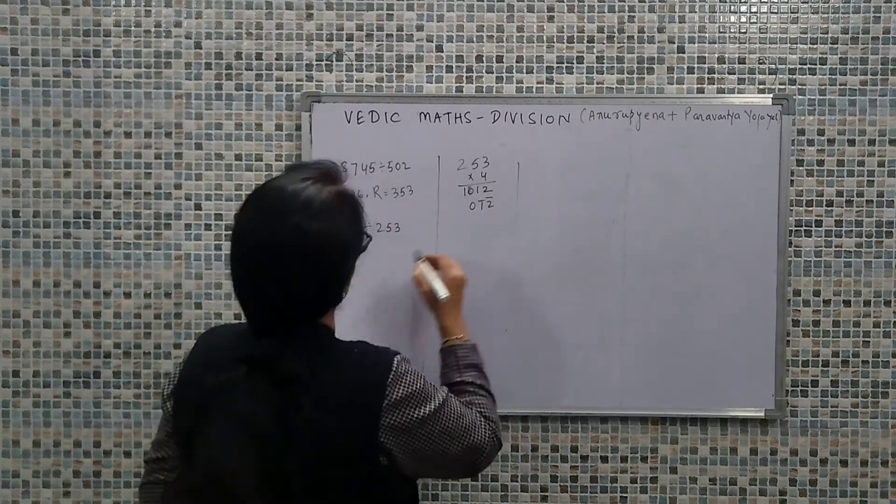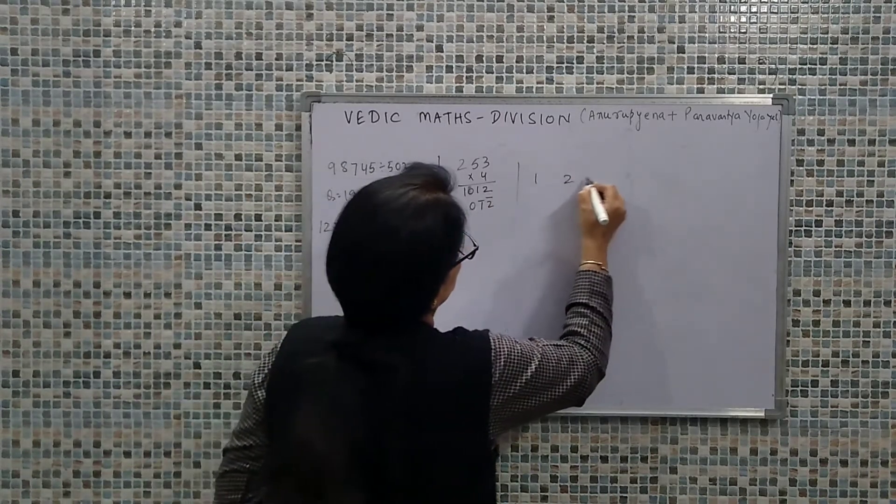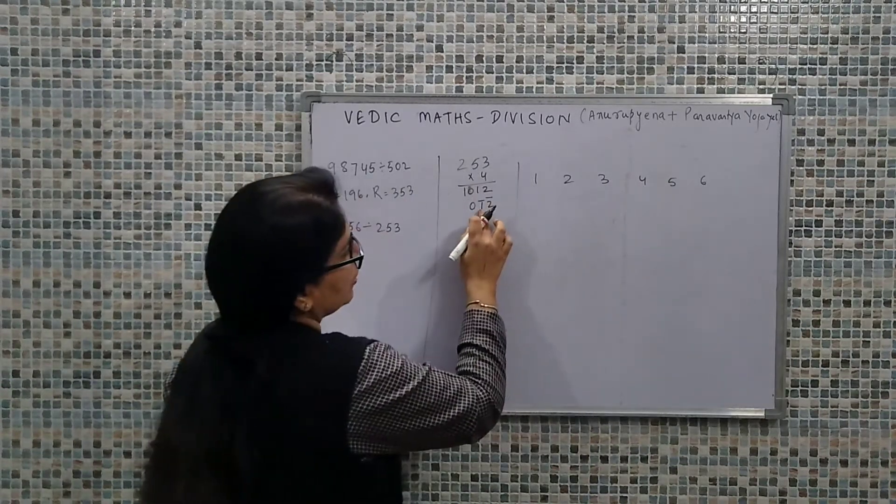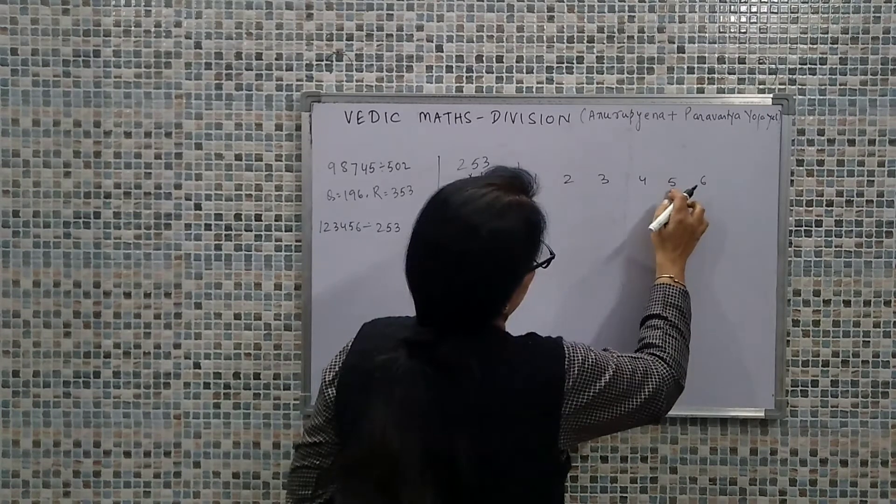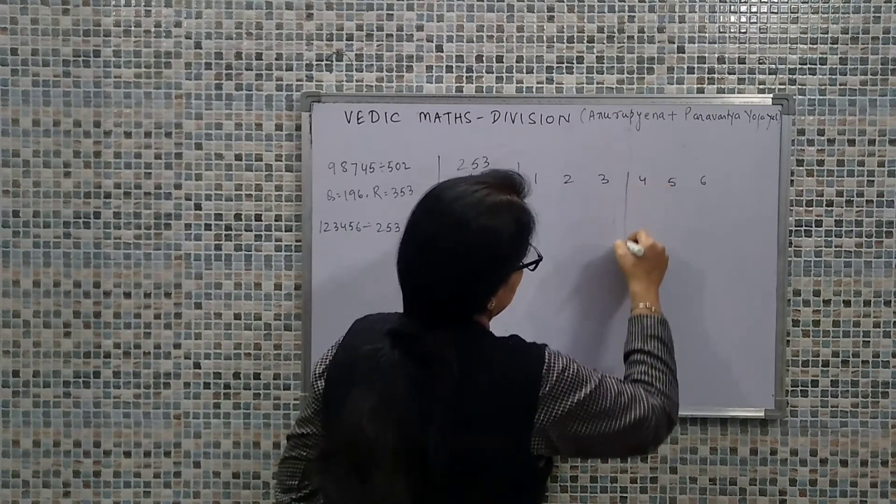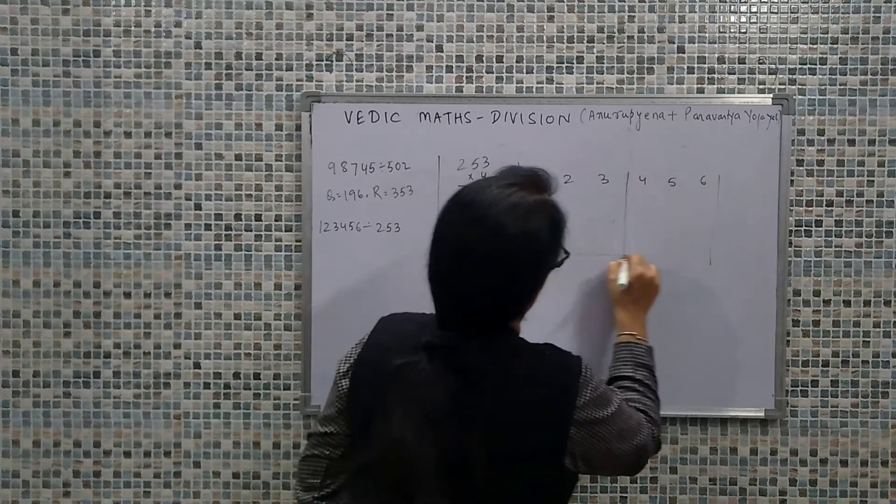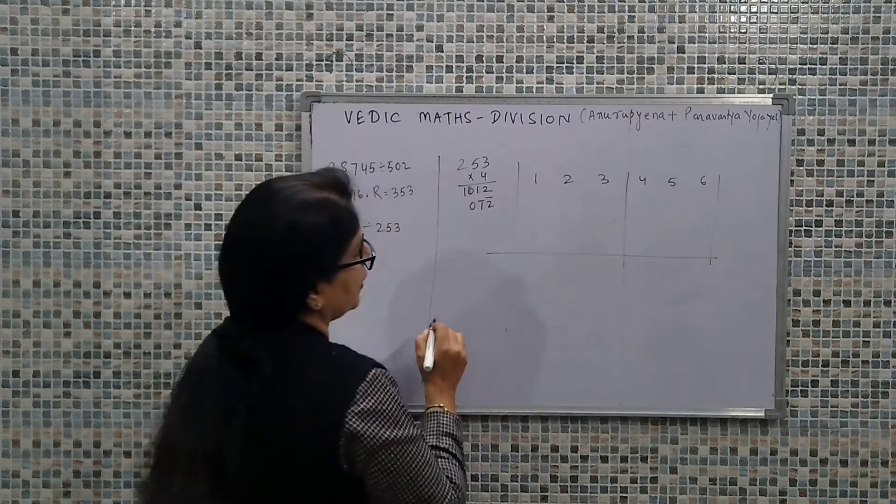Now our dividend is 123456. How many digits are there? Three. So 1, 2, 3. I split this way. I have divided it like this.